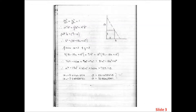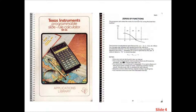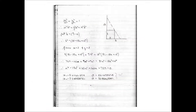I solved this problem way back around the early 1980s after producing a fourth degree polynomial and solving for the roots using a programmable calculator that had a root-finding program. I knew the solution was correct since the two roots summed to give the length of the ladder and the two angles produced by the slope of the ladder summed to 90 degrees.